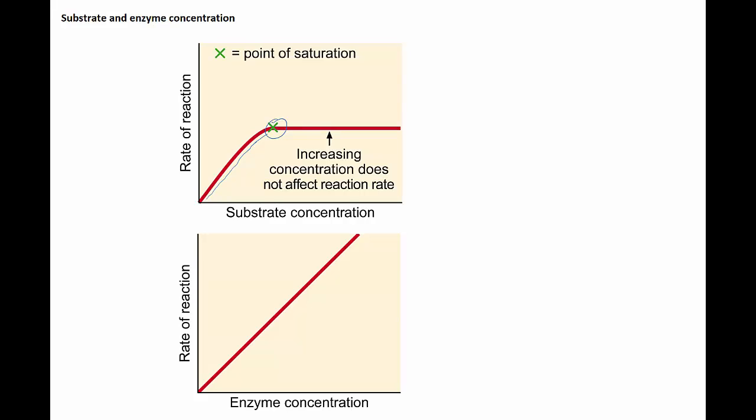Every single enzyme is doing its job as fast as it can and if you keep adding substrates, they can no longer deal with the excess substrates. Now they will still catalyze those substrates eventually, but it's simply that the rate of reaction will then level off. So after the point of saturation where you have so many substrates, the rate of reaction will level off.